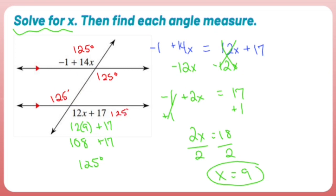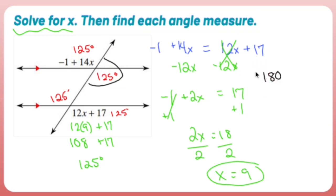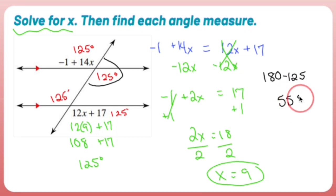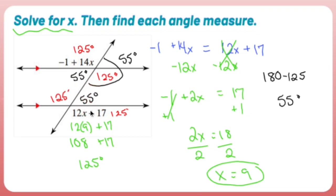It makes sense because it's vertical to that angle. Now if all of those are 125 degrees, any two adjacent angles add up to make a straight angle — 180 degrees. So 180 minus 125 gives me 55 degrees. That angle is 55 degrees, its vertical angle is 55 degrees, its alternate interior angle is 55 degrees, and its vertical is 55 degrees.